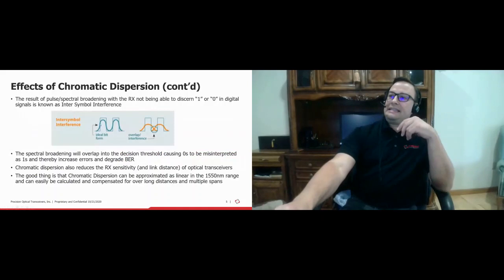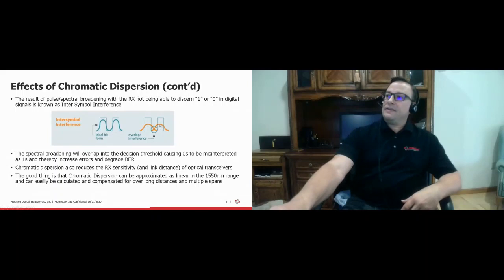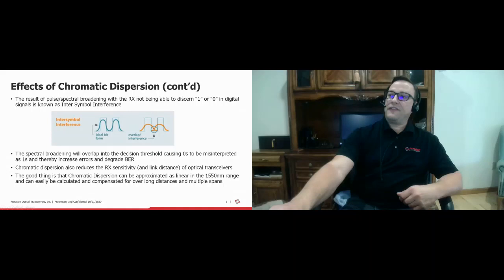In time, 1s and 0s are transmitted and the receiver assembles those packets, looking at each individual bit and making a decision as to whether it is a 1 or 0. With the overlap of signals as they begin to broaden, the timing allows the signal to bleed over or interfere with adjacent bit times. This is called inter-symbol interference, and that's where you start having 1s and 0s being misinterpreted.